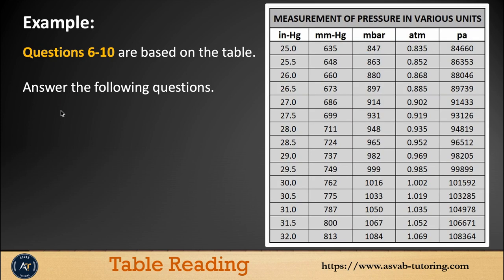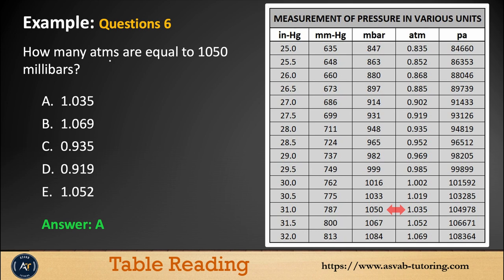There's another table here. Answer the questions from 6 to 10 based on the table. You could see here, how many ATMs are equal to 1050 millibar? The correct answer is letter A. You could see what is 1050 - here is 1050 in millibar, and you have to find it in ATMs.